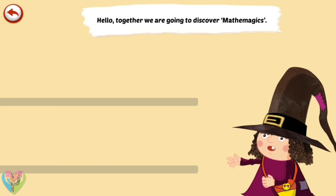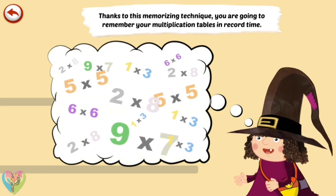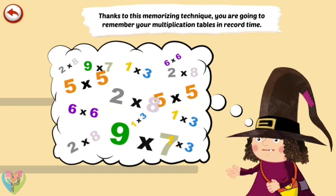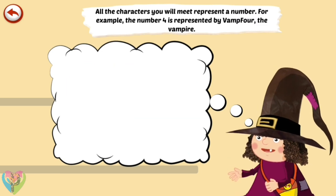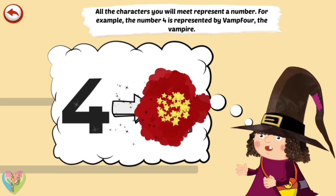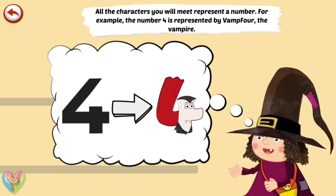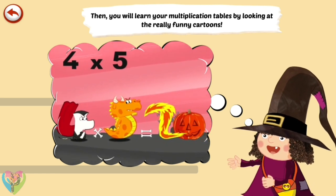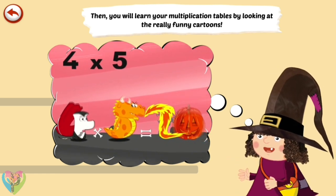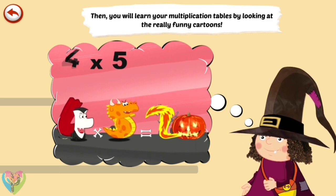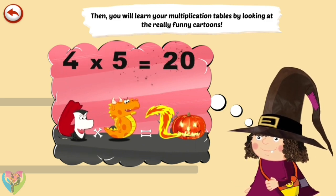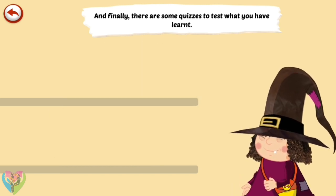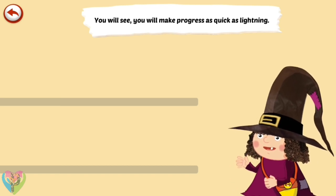Hello, together we are going to discover math and magic. Thanks to this memorising technique, you are going to remember your multiplication tables in record time. All the characters you will meet represent a number. For example, the number 4 is represented by Vamp 4, the vampire. You will learn your multiplication tables by looking at really funny cartoons. And finally, there are some quizzes to test what you have learnt. You will make progress as quick as lightning.